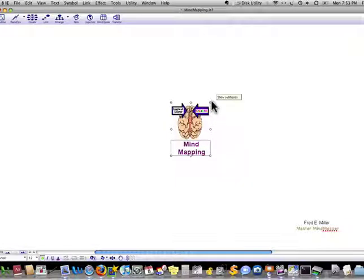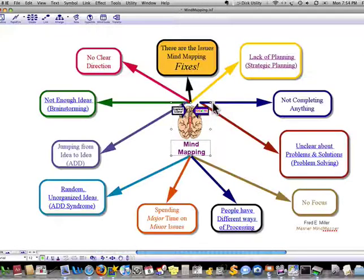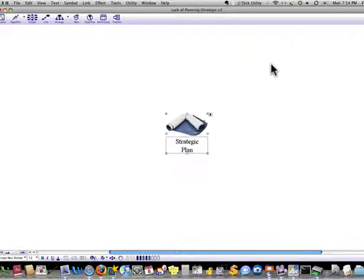Mind Mapping starts in the middle of the page and everything radiates from the center. You can do all the things we talked about: strategic planning, problem solving, process development, all kinds of things. So let's take a look at strategic planning.